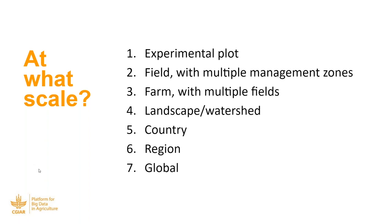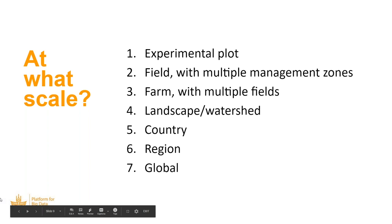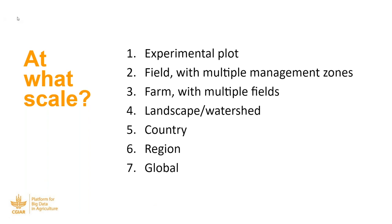In theory everything goes down to the plot, because even if you do global modeling you're still working on a plot or running models that represent one plot — though the grid size can go up to five by five or ten by ten kilometers, or half a degree. The ideal case is an experimental plot where we can collect our own data. When it gets to field scale with multiple management zones, or a farm with multiple fields, or watersheds and landscapes, up to country, region, or global — today we'll mostly focus on the first four levels, but a lot of the data we mention also applies up to global.